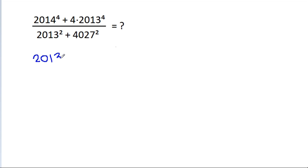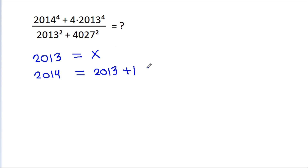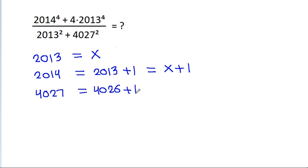Suppose 2013 is equal to x. Then 2014 will be equal to 2013 plus 1, that is equal to x plus 1. And 4027 is equal to 4026 plus 1, which is 2 times 2013 plus 1, that is equal to 2x plus 1.